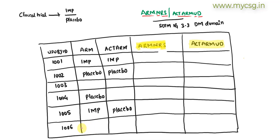Now let's populate ARMNRS for each subject. ARMNRS is meant to capture the reason why ARM or actual ARM is null. For subjects 1001 and 1002, neither ARM nor actual ARM is null, so ARMNRS has no meaning and should be left null.